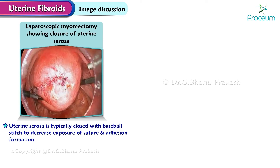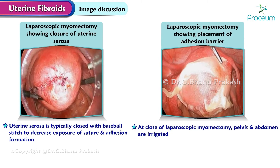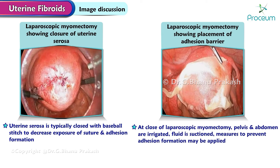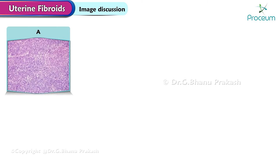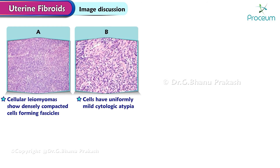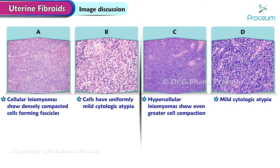Here is an image of a laparoscopic myomectomy showing the placement of adhesion barrier. At the close of laparoscopic myomectomy, the pelvis and abdomen are irrigated, the fluid is suctioned, and measures to prevent adhesion formation may be applied; however, the safety and effectiveness of these barriers in laparoscopic surgery have not been established. Image A: cellular leiomyomas show densely compacted cells forming fascicles. Image B: the cells have uniformly mild cytologic atypia. Hypercellular leiomyomas show even greater cell compaction (image C) with mild cytologic atypia (image D).